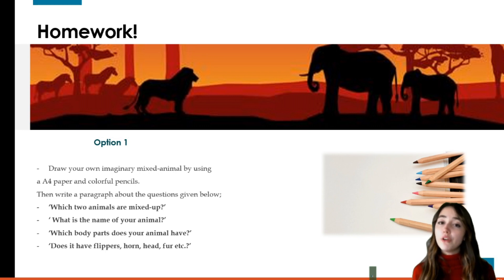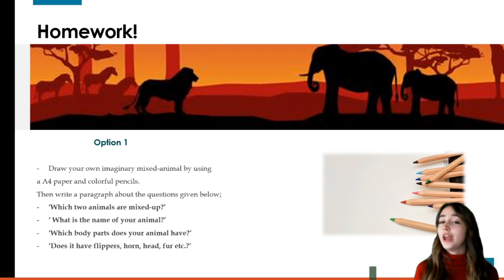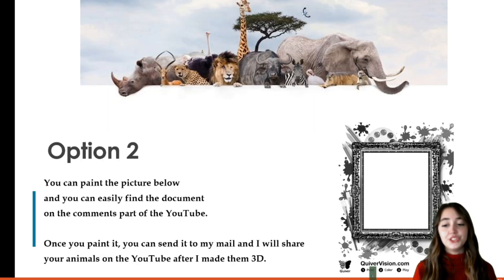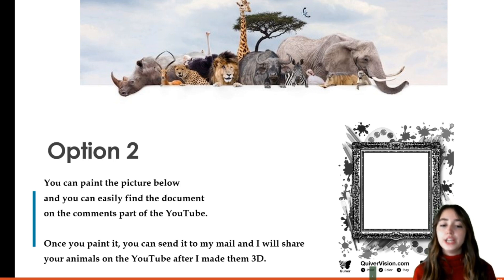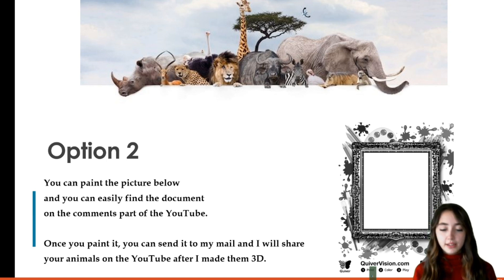Then write a paragraph about it: Which two animals are mixed up? What is the name of your animal? Which body parts does your animal have? For option two, paint the provided picture — I will share it in the YouTube comments below. Once you paint it, send it to my email and I will make your animal 3D and share it on YouTube!